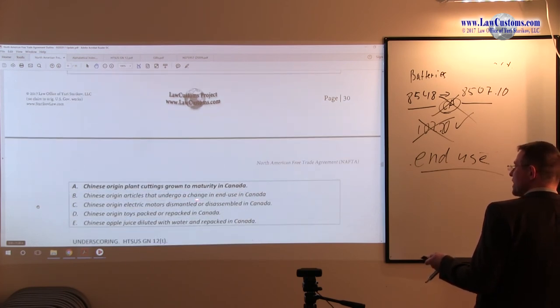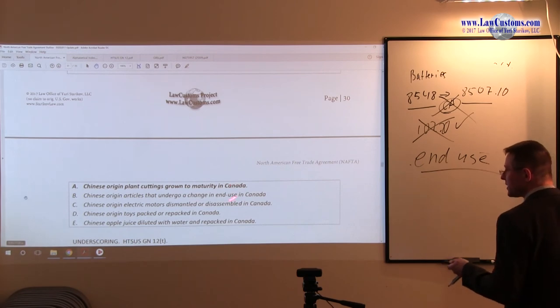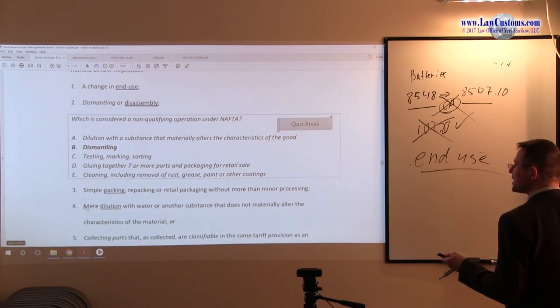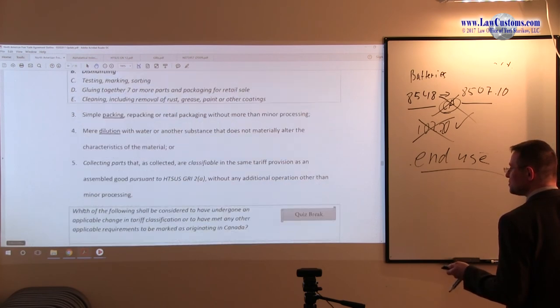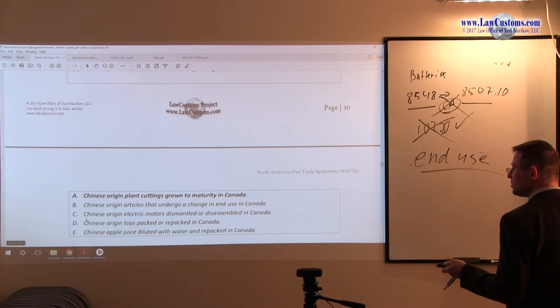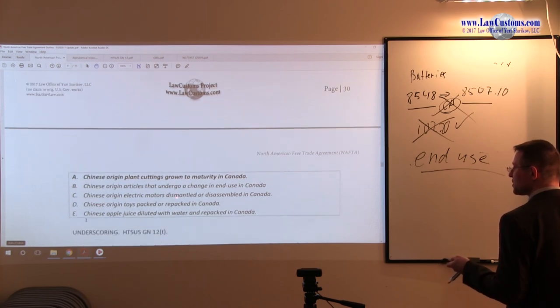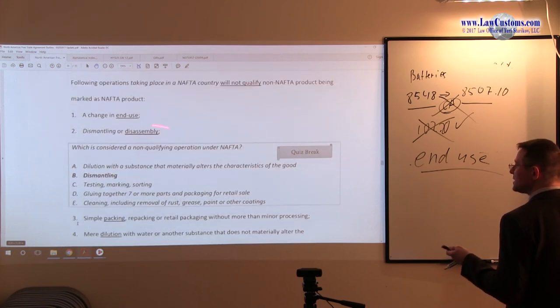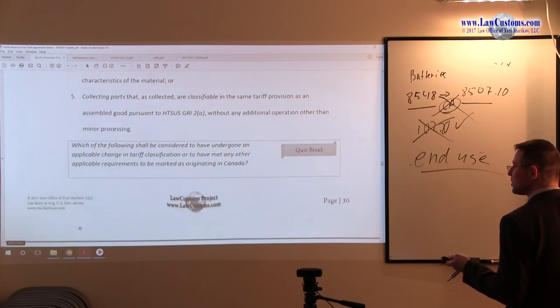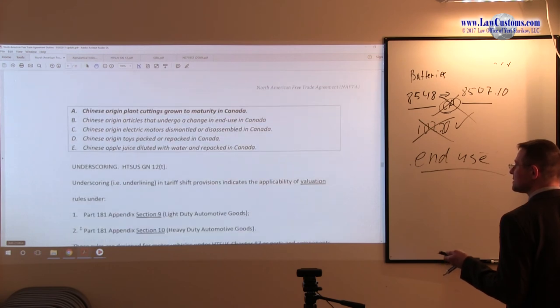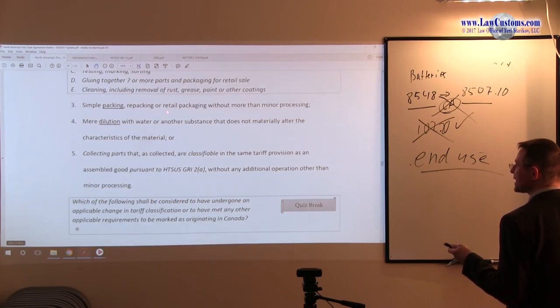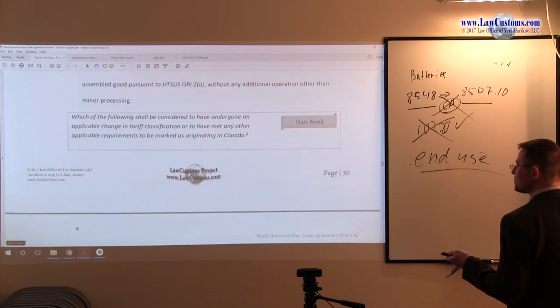Chinese origin articles that undergo changing end use. This is changing end use just like with the batteries and changing end use is explicitly excluded. So B is excludable. Chinese origin electric motors dismantled or disassembled in Canada. Dismantling or disassembly is also prohibited under section 102.18. So C is incorrect. Chinese toys packed or repacked in Canada. Simple packing or repacking is also prohibited.